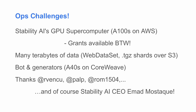So this is called practical text generation — the ops challenges behind this. It's been wonderful to have access to the GPU supercomputer of Stability AI — tons of A100s on AWS. If you're looking for GPU compute, there are grants available and we can help. We've got terabytes and terabytes of data — web dataset gzip tar files streaming over S3. For the bots and generators, we've got some stuff on CoreWeave, and there's a lot of coordination there. Thanks to our ops folks Richard Venku and PalabinRam1504, and to Stability AI CEO Imad for making this possible.